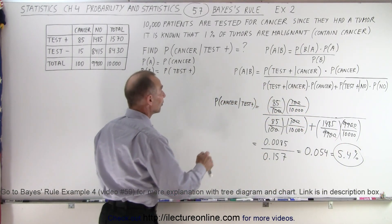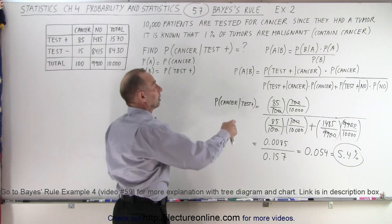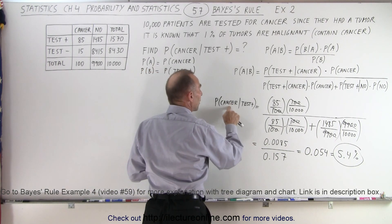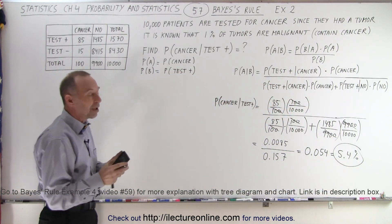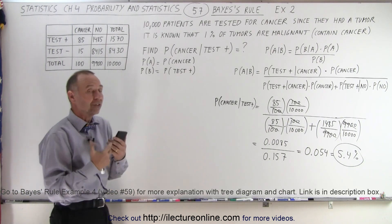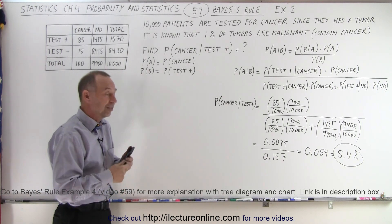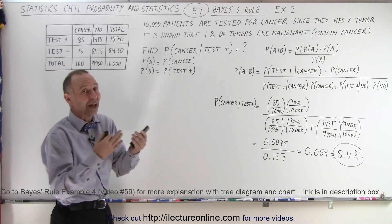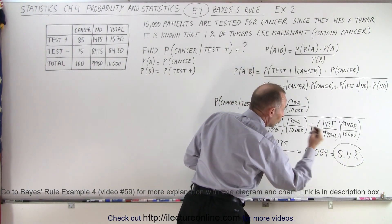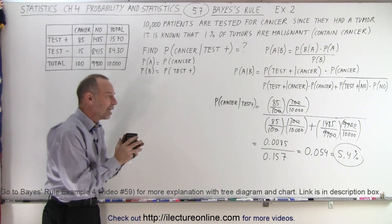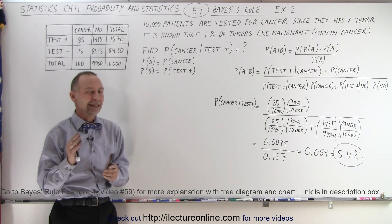If the patient tests positive — given that all 10,000 patients walked in with a tumor — what's the probability they actually have cancer? It turns out to be 5.4%, roughly 1 in 20 patients who test positive will indeed have cancer. So just because you test positive doesn't mean you have cancer. Using Bayes' theorem, we can narrow it down: of those who test positive, only 5.4% will indeed have cancer. And that is how it's done.